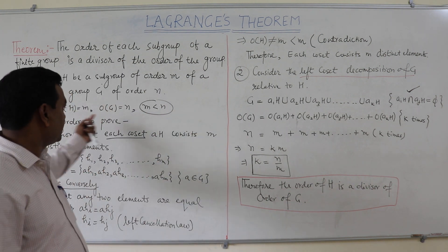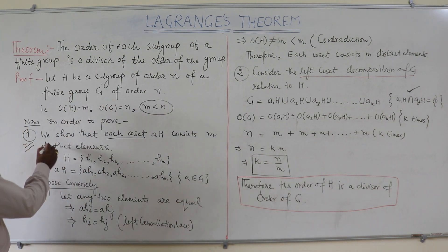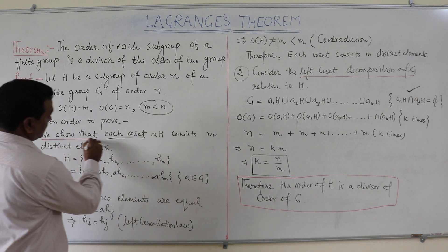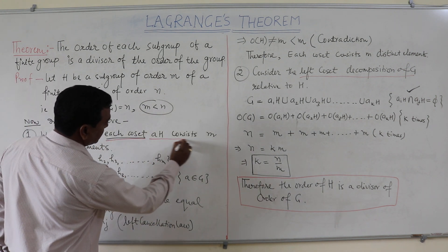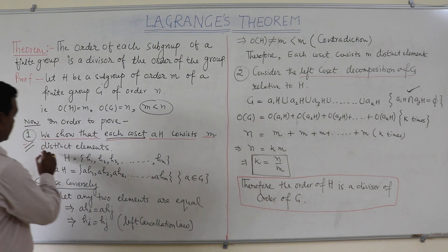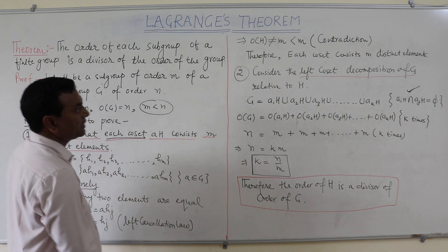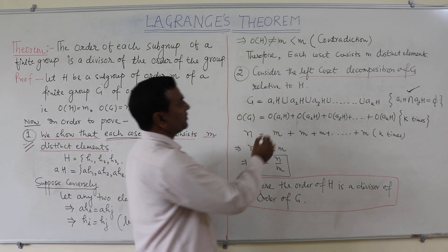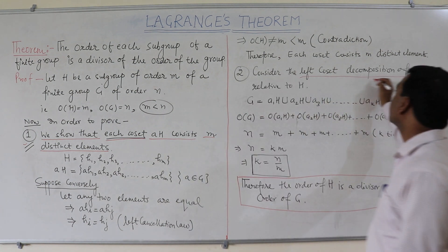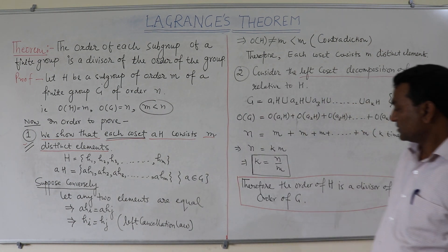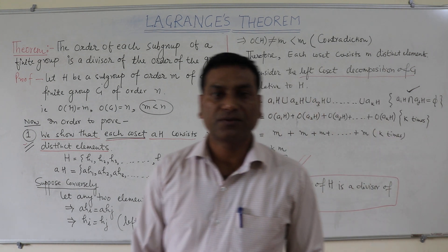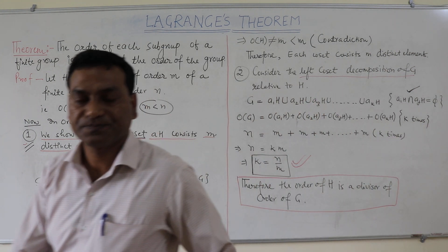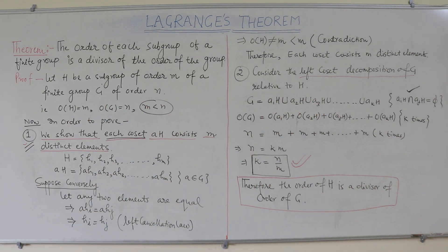So, what we have seen here is that we have proved this theorem in two parts. First, we showed that each coset consists of M distinct elements, and then we considered the left coset decomposition of G. This is proved. Thank you.